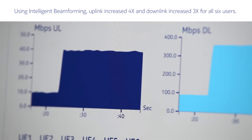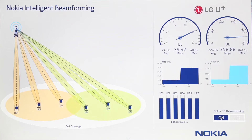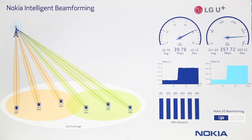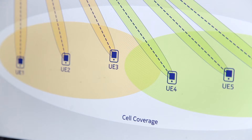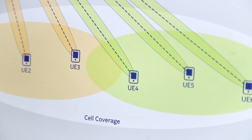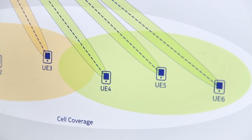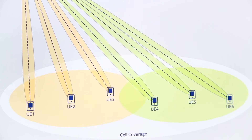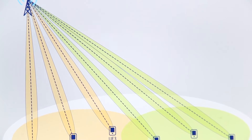How does this work? Nokia 3D beamforming is a continued innovation of its intelligent beamforming techniques. We use a hybrid combination of vertical beamforming layers with multiple adaptive dual-layer horizontal beams.